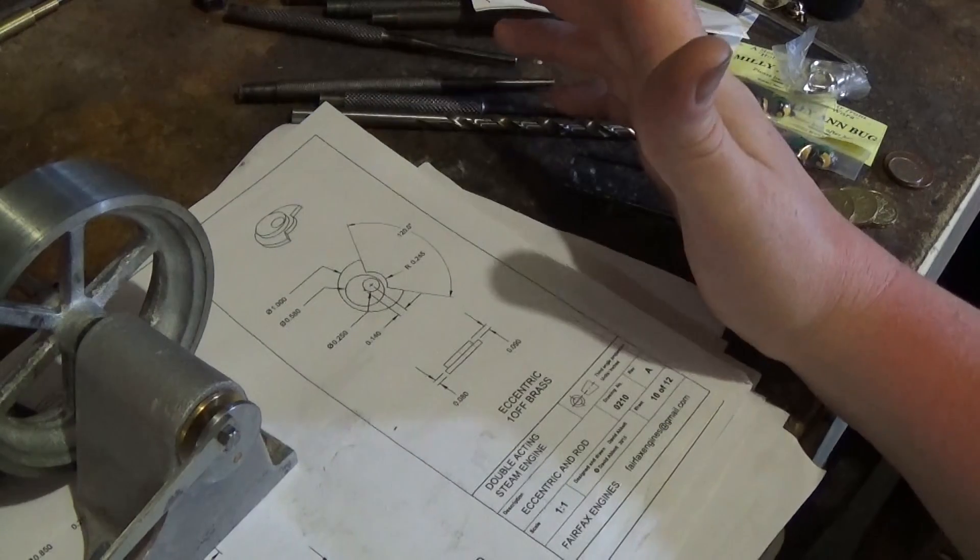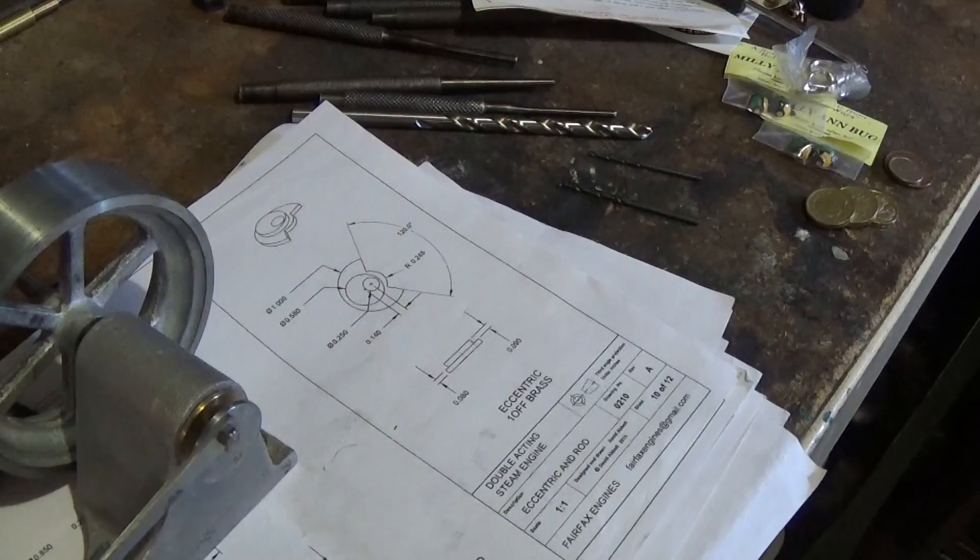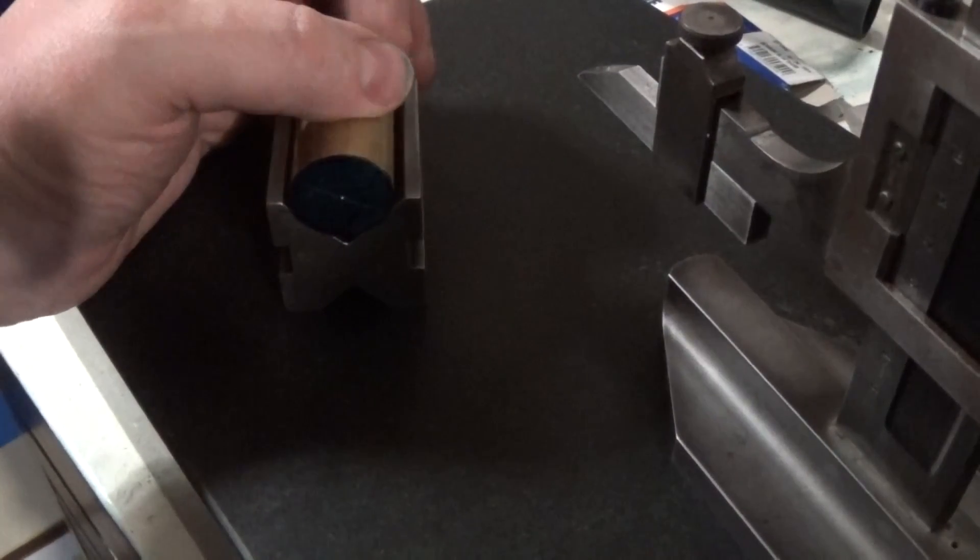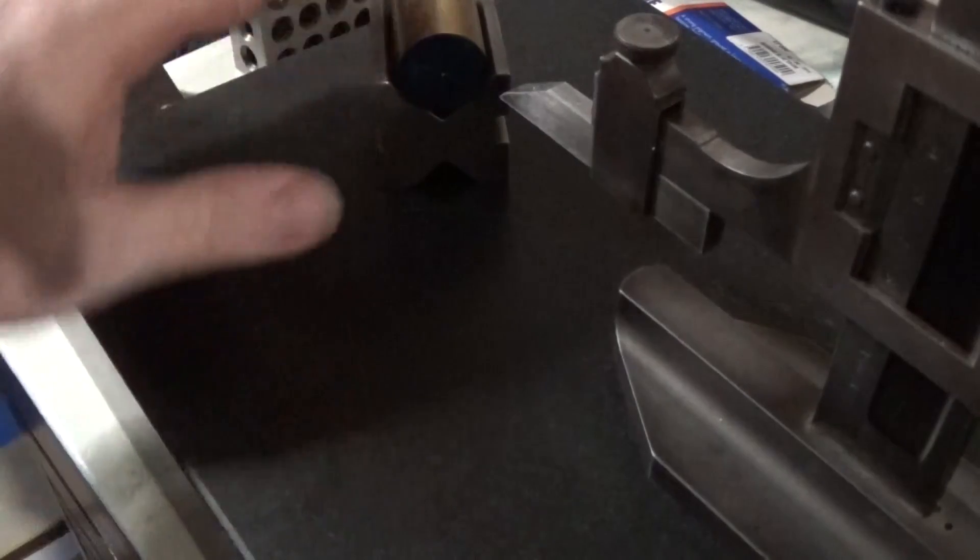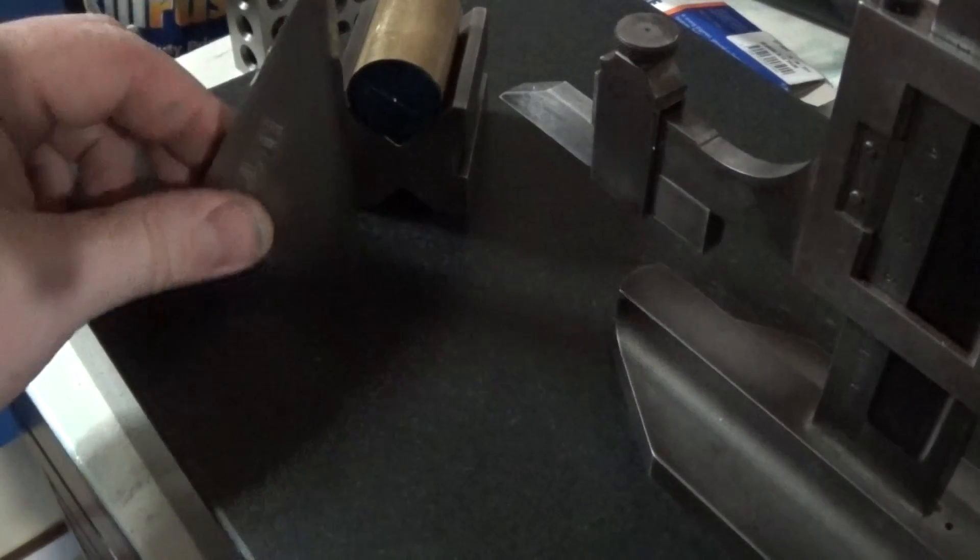So next job, I guess, is to mark this out. What I've done is I've got the height gauge out and I found the center there, and then I've set it up with a little precision square there at 90 degrees.